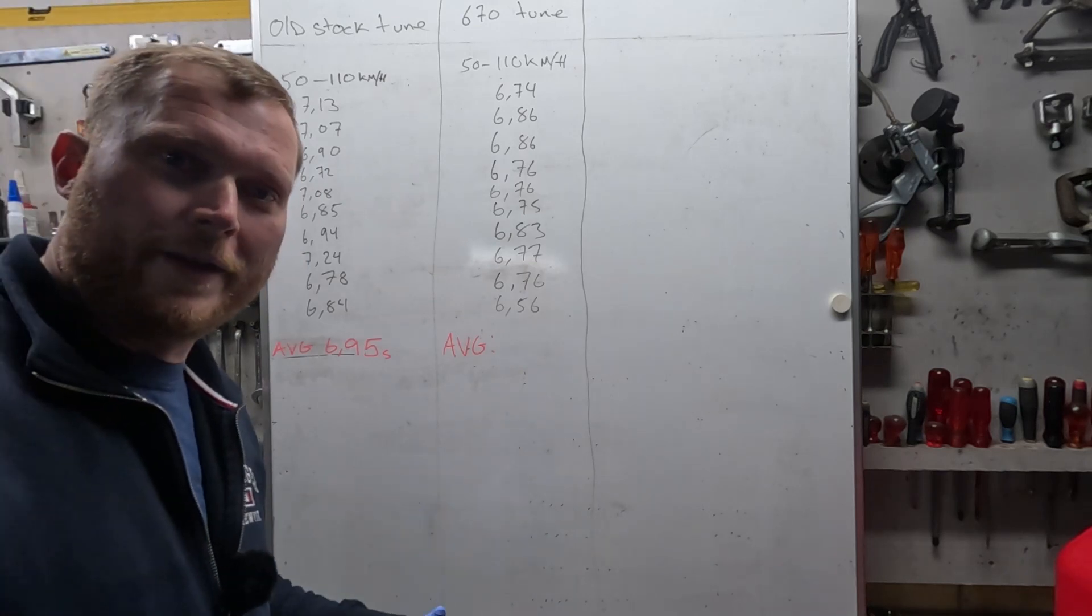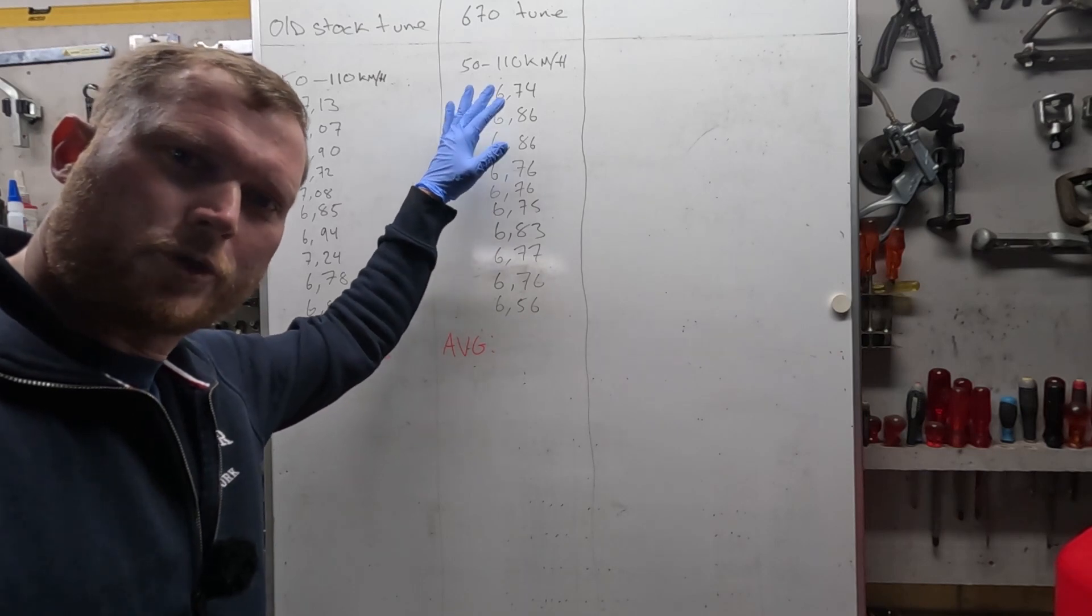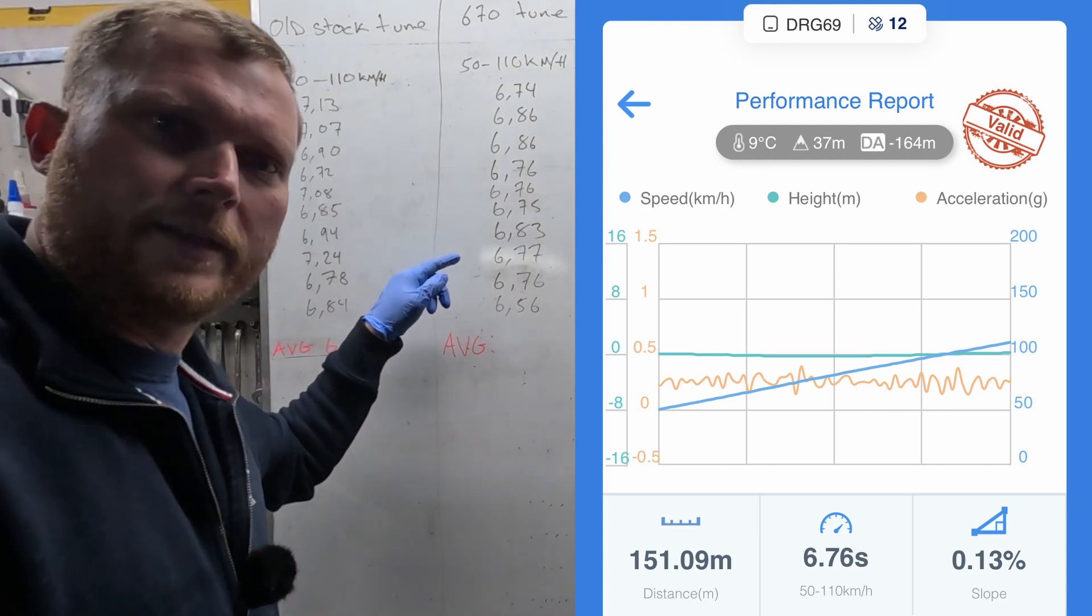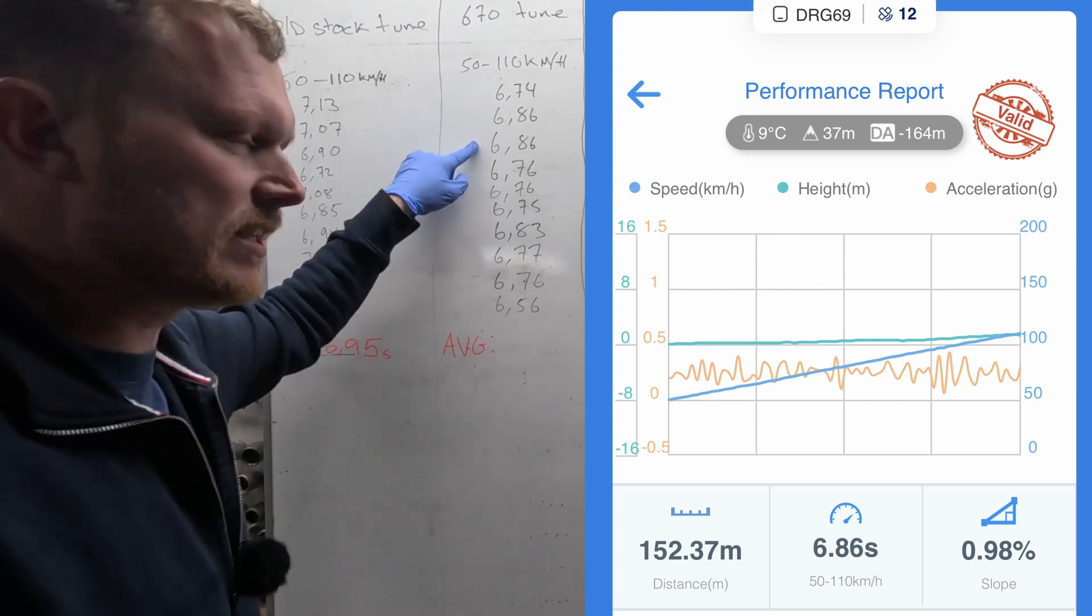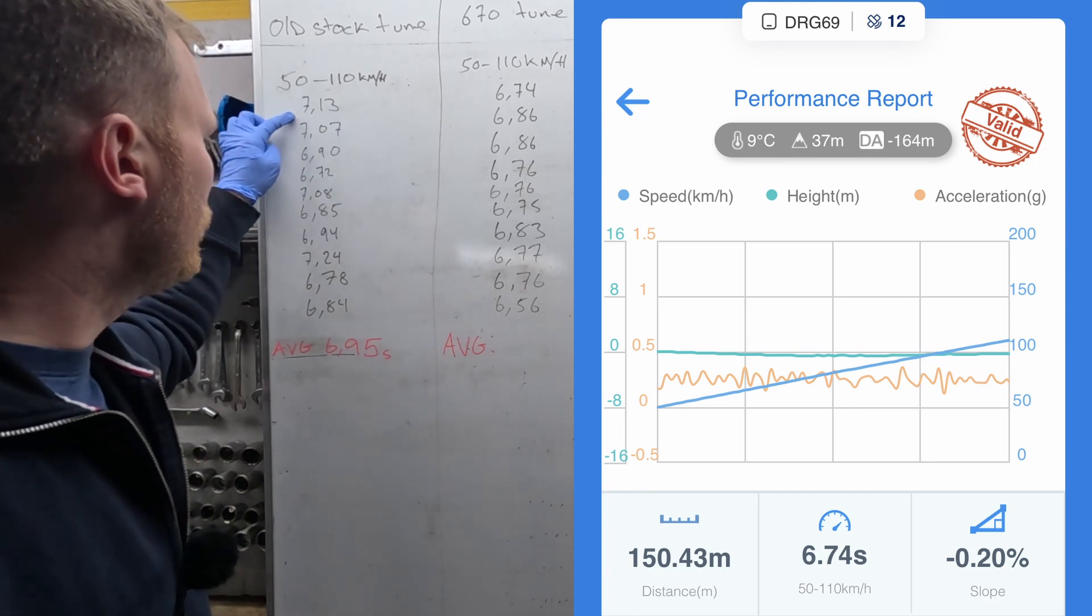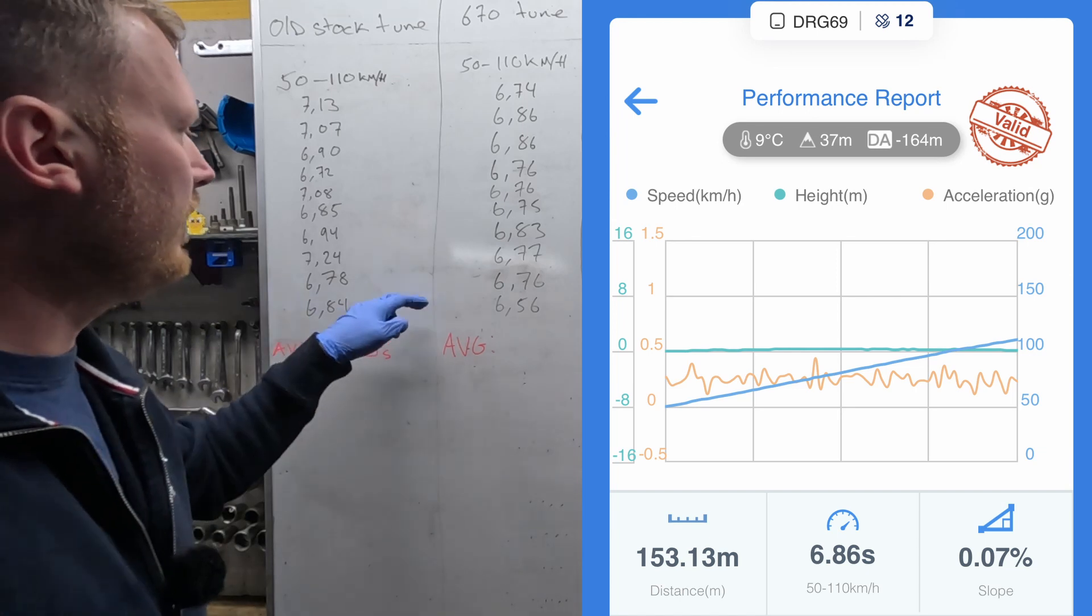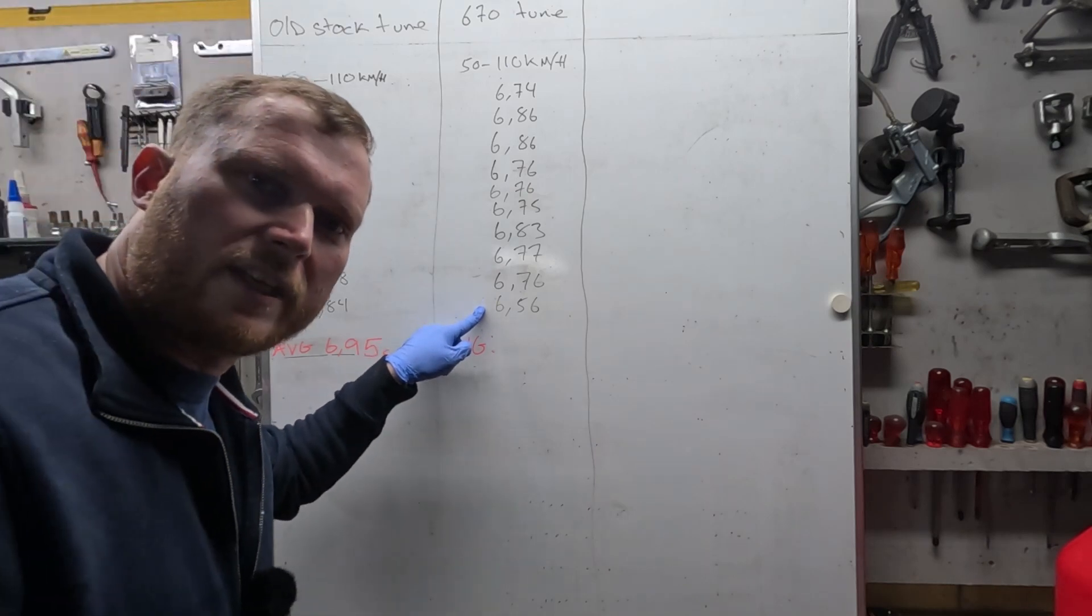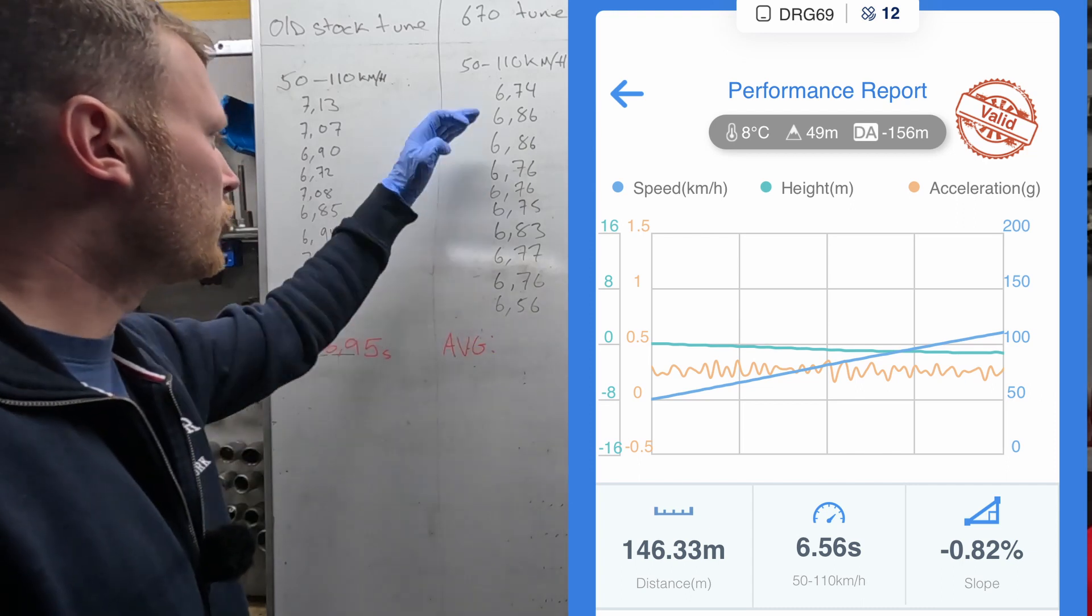So we managed to do the same tests. 50 to 110 kilometers per hour, 10 runs. And right off the bat it's actually super interesting. Notice how consistent all of these here are. Whereas on the old stock tune they were a bit all over the place. And then on the same day just updating to the latest tune, they were a lot more consistent. And honestly we even had a really low one, but still super consistent.